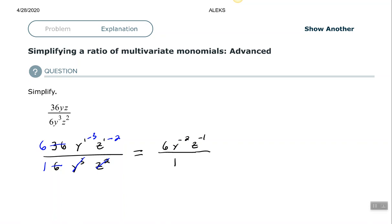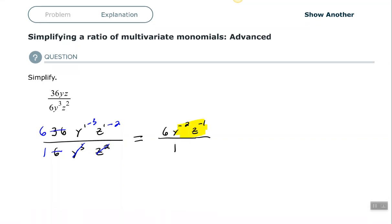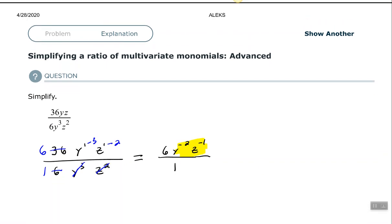So you see that both of my variables have negative exponents. So I need to move both of those variables since they're in the numerator with the negative exponent. I need to move them to my denominator, which will change the sign of the exponent. We'll make the exponent positive.